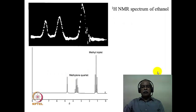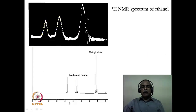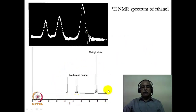In the last lecture, we ended with the presentation of the spectrum of ethyl alcohol, and we indicated that ethyl alcohol has three different types of hydrogen corresponding to the OH hydrogen, the CH2 hydrogen, and the CH3 hydrogen, which appear at different frequencies in the NMR spectrum. We also discussed the possibility of having fine structures like this in a high resolution spectrum of the NMR of ethyl alcohol.